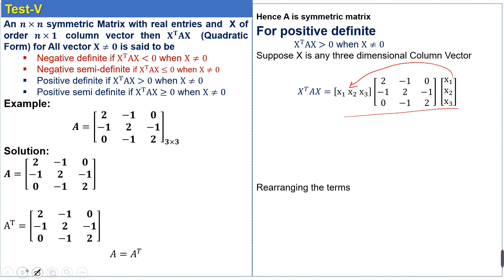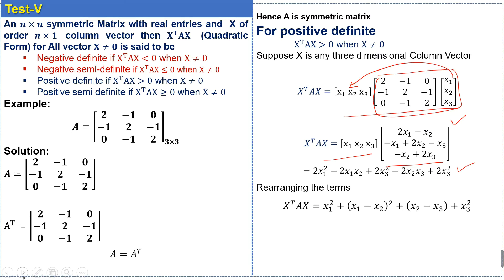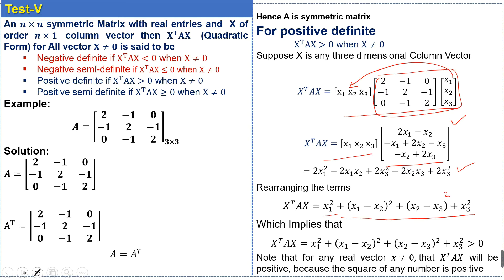After multiplication we get the resulting expression, and then we rearrange all the terms. After rearranging, we get the quadratic form — there will be squared terms. This is the quadratic form, which equals a sum of squared terms.